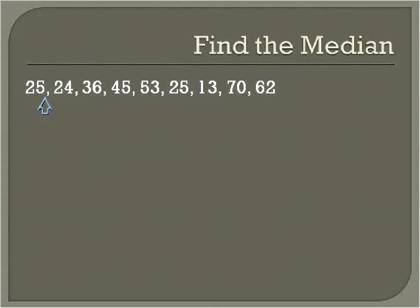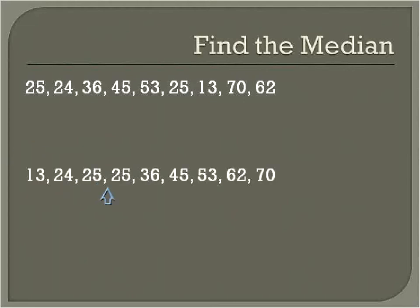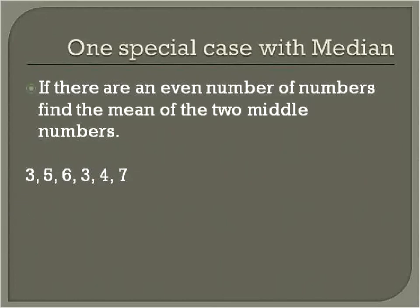Let's do another example. We've got this list of numbers and we want to find the median — the number right in the middle. The first step is to list all these numbers from least to greatest. We'll start with 13, then 24, 25 — there are a couple of 25s, so we make sure to list all of them. We get: 13, 24, 25, 25, 36, 45, 53, 62, 70. Now we count: one, two, three, four, five, six, seven, eight, nine — there are nine numbers. So the number right in the middle is 36. That's our median.